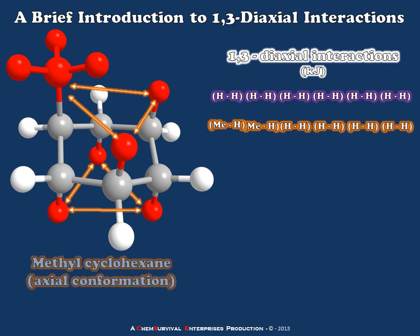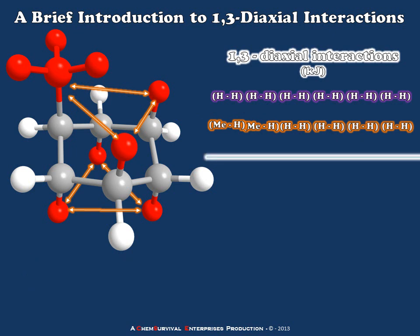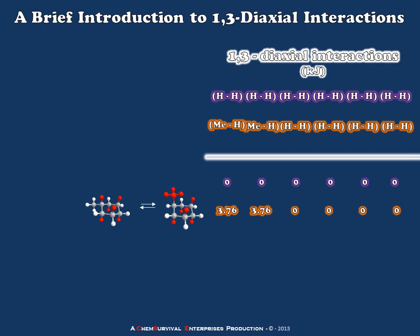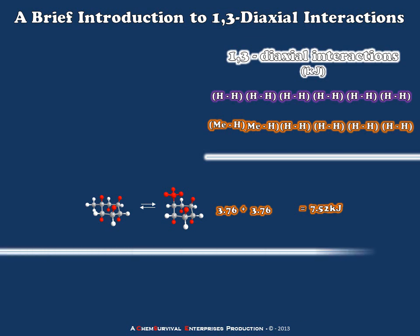Now things should start to become clear. Looking at the differences between the two potential conformers, in the axial position I have a couple of interactions which are worse off than when it's in the equatorial position. Specifically, those methyl-hydrogen interactions add 3.76 kilojoules per mole of instability to the axial conformer. So the total change in energy, modeling this as a two-state equilibrium, would be 7.52 kilojoules per mole in favor of the equatorial conformer. To put this number to use, I can simply use the equation that relates the equilibrium constant for a two-state process to the free energy difference between the two states.